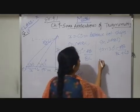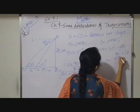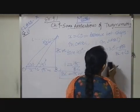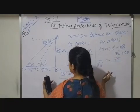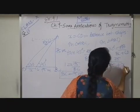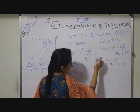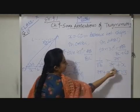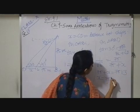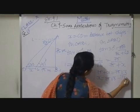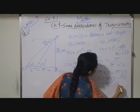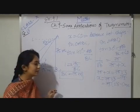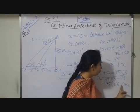Now, tan 30 degree value we are knowing that is 1 upon root 3 which is equals to A, B. A, B value also known that is 75. So, here I will write down 75 upon B, C value again 75 plus X. Now, shifted that side you will get 75 plus X which is equals to 75 root 3. Shift this 75 there. So, X is equals to 75 root 3 minus 75. 75 here I will take common root 3 minus 1 meter. So, here you can conclude that thus distance between two shapes is 75 into root 3 minus 1 meter.